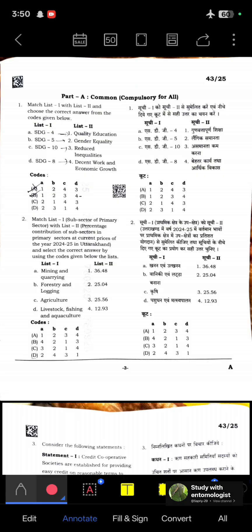First question: Match list one with list two and choose the correct answer from the codes given below. SDG 4 is quality education, SDG 5 is gender equality, SDG 10 is reduced inequalities, and SDG 8 is decent work and economic growth. All are in the series, so answer is 1, 2, 3, 4. Option B is correct.